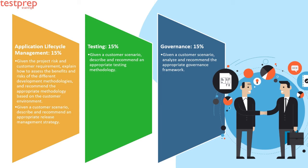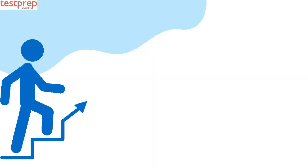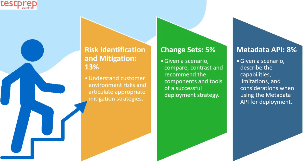Number three: Testing, 15%. Given a customer scenario, describe and recommend an appropriate testing methodology. Number four: Governance, 15%. Given a customer scenario, analyze and recommend the appropriate governance framework. Number five: Risk Identification and Mitigation, 13%. Understand customer environment risks and articulate appropriate mitigation strategies.